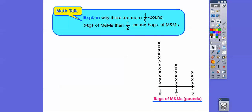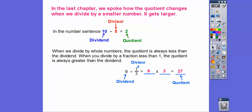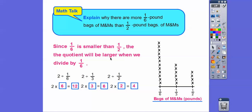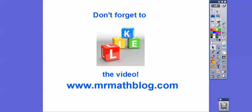So why were there more one-sixth-pound bags than one-half-pound bags? When we divide by smaller numbers, the quotient becomes larger than the dividend. Since one-sixth is smaller than one-half, dividing by one-sixth gives a larger quotient than dividing by one-half. That's why there were twelve one-sixth-pound bags but only four one-half-pound bags. I hope that makes sense — take care!